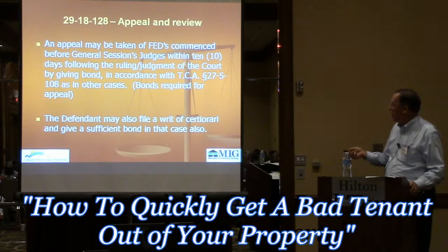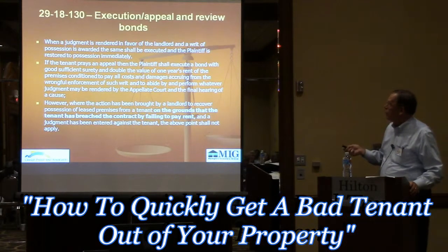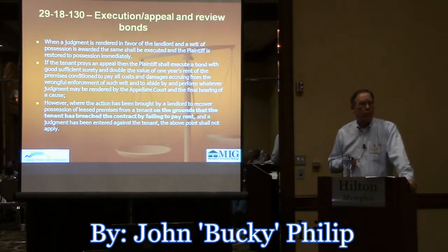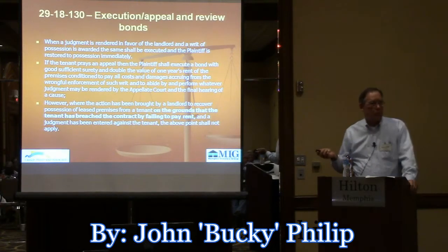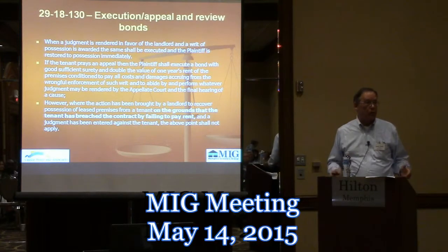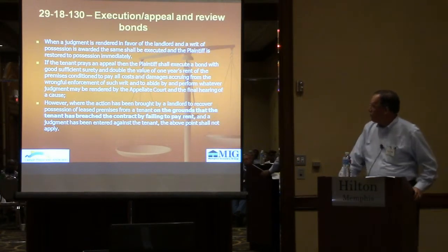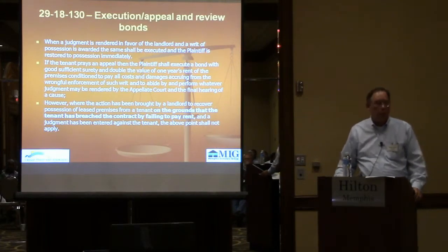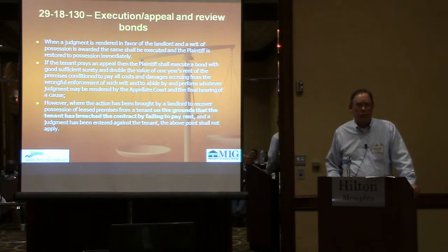On appeal and review, the tenant has 10 days to file an appeal. They can also file a certiorari bond on appeal. This is where you need to make sure the judge puts on your judgment that it was for breach of non-payment of rent. If the tenant appeals and that's not noted on the writ, the landlord has to post a bond in double the amount of rent for one year. However, if the grounds — that the tenant breached the contract by failing to pay rent — are noted on the warrant, then the tenant has to post a bond equal to one year's rent at the time they appeal, and you can immediately issue the writ through general sessions court without waiting.